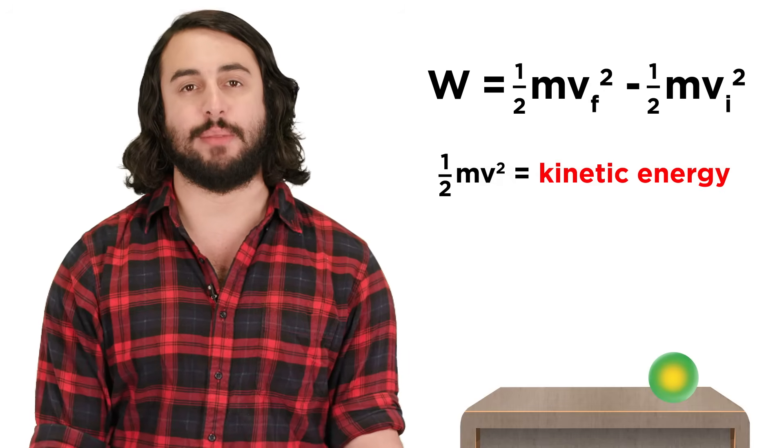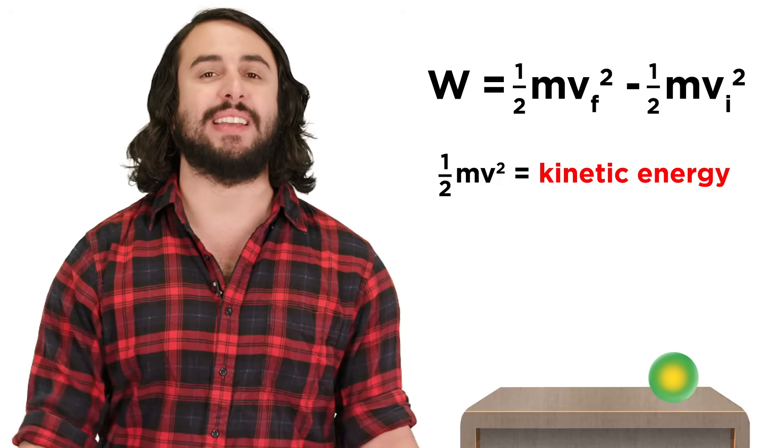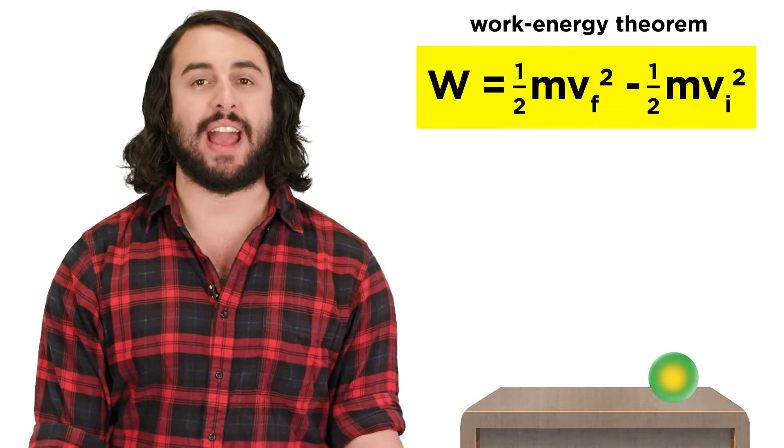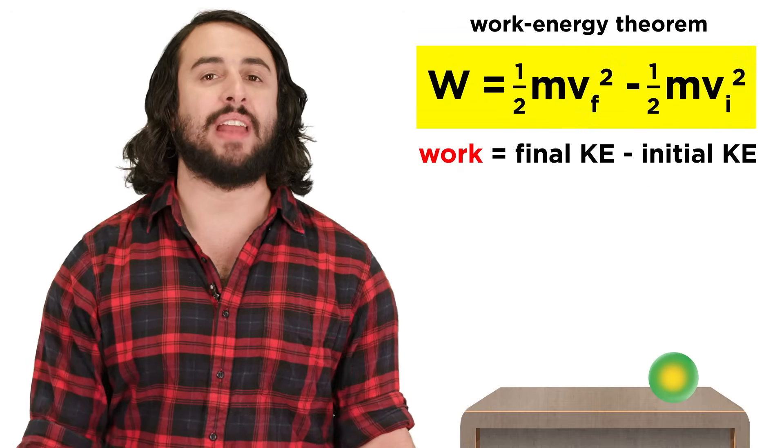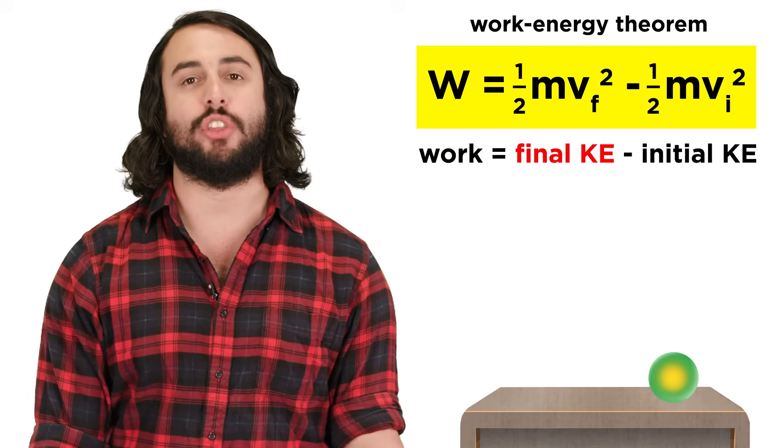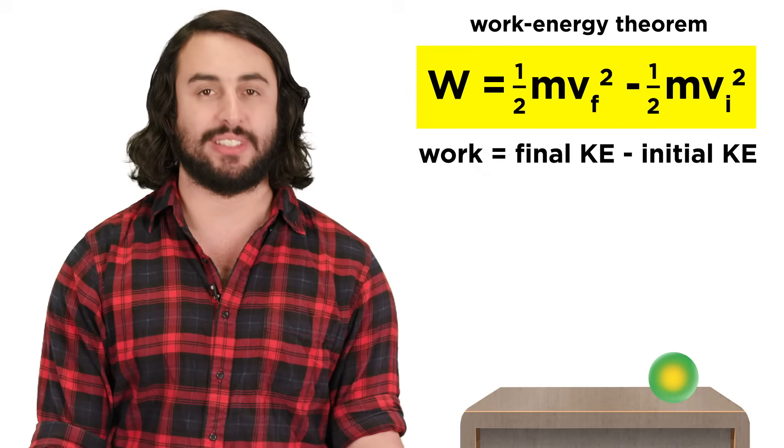This term one-half mass times velocity squared represents the kinetic energy of a system. So now we can express the work energy theorem by saying that when an external force does work on a system, the amount of work will be equal to the change in kinetic energy of the system.